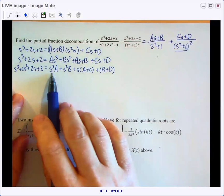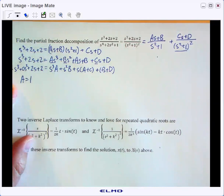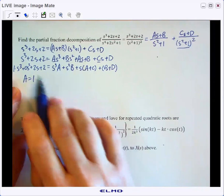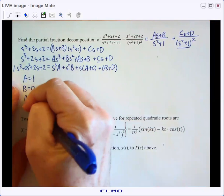And so that has to be equal to S cubed plus zero S squared plus 2S plus 2, which could set up a linear system. You could equate the like coefficients, but let's just go ahead and do that. So we know that A has to be one. The coefficient of the S squared has to be the same, so that tells me that B has to equal zero.